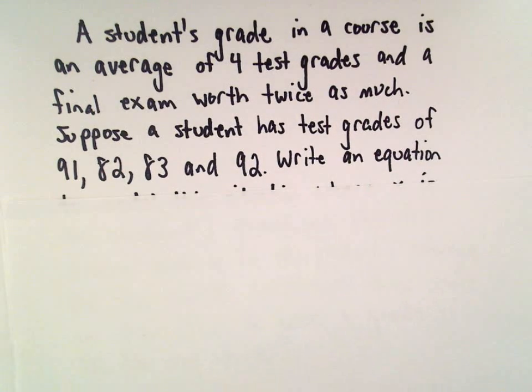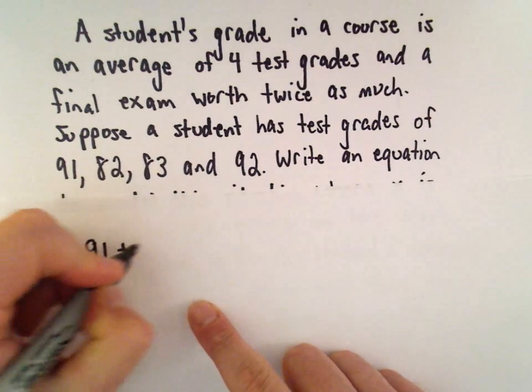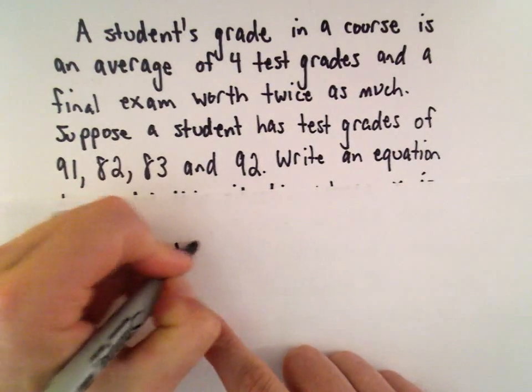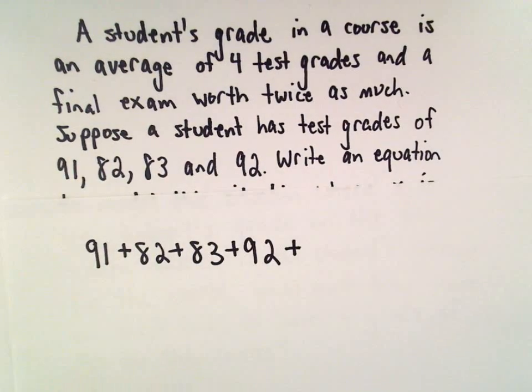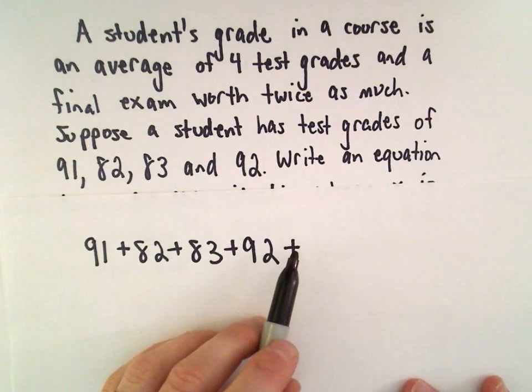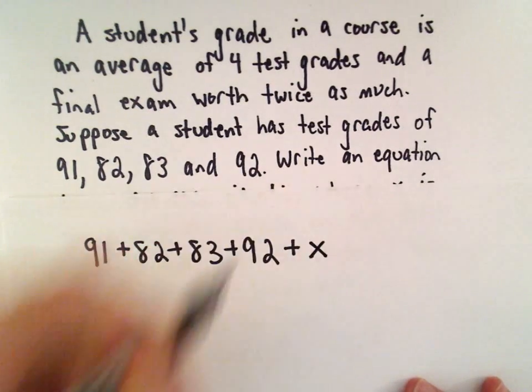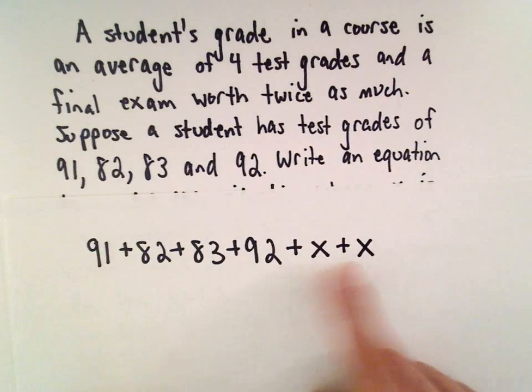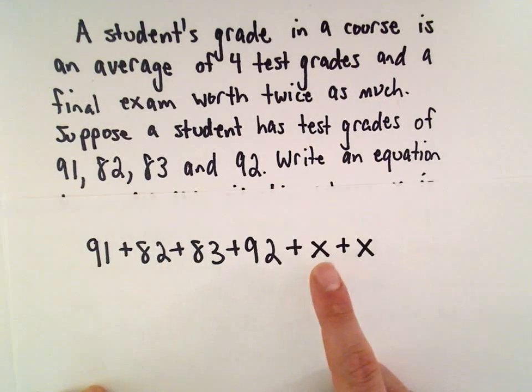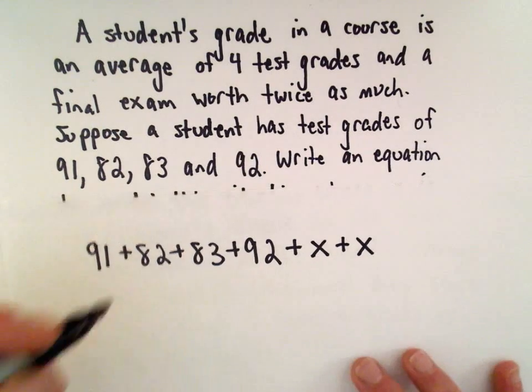To find an average, we add up the test scores, so we've got a 91, an 82, an 83, and a 92, plus the grade we get on the final. Since it's counted as twice as much, it's really like you take that test twice and get the exact same score, so it's like taking two additional tests but getting the same score.